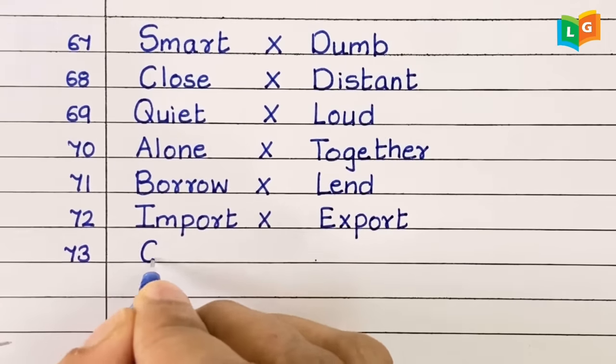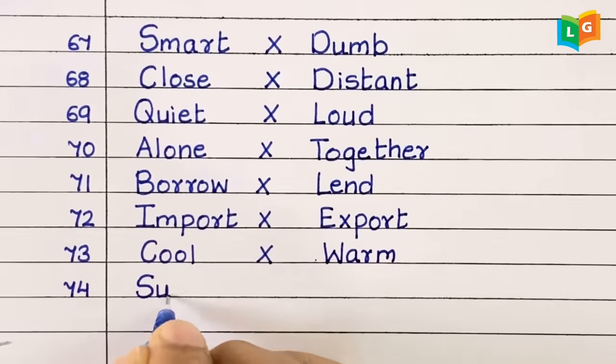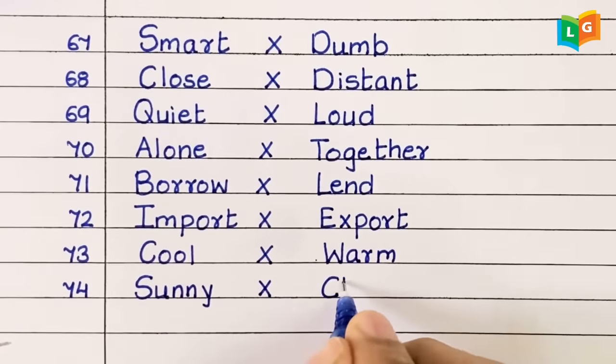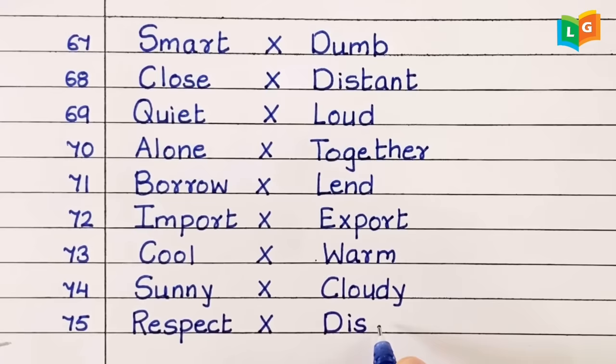Seventy-three, cool, warm. Seventy-four, sunny, cloudy. Seventy-five, respect, disrespect.